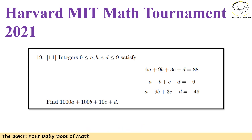The problem is kind of easy to understand. We have integers a, b, c, and d between 0 and 9, including those numbers. We have three equations as you see here, and we want to find 1000 times a plus 100 times b plus 10 times c plus d.